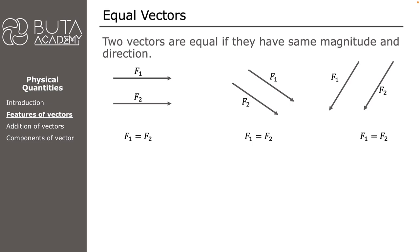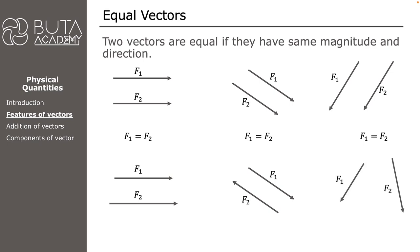If either the magnitude or direction of two vectors is not the same, the vectors are not equal. In the first example the directions are the same but the second vector is longer. In the second example the magnitudes are the same but their directions are different. In the last example neither magnitude nor direction is the same. As a result, none of these vector pairs consist of equal vectors.